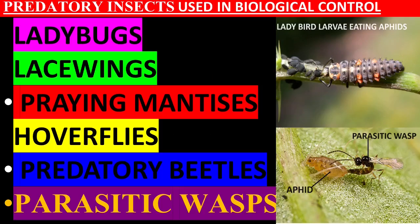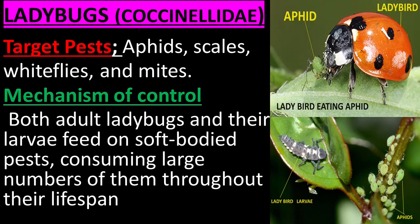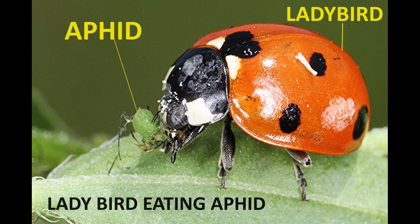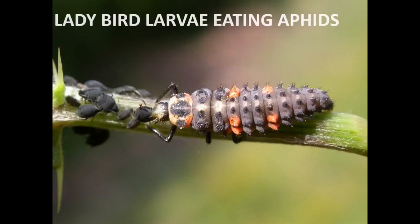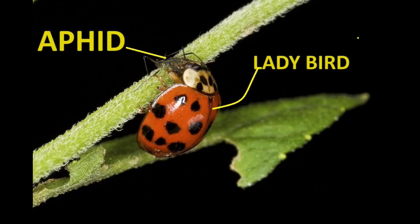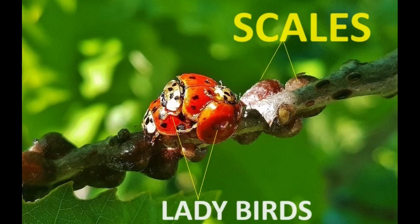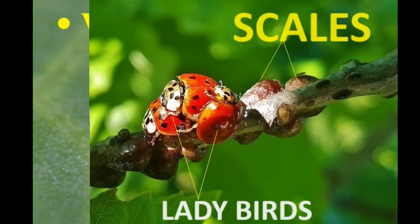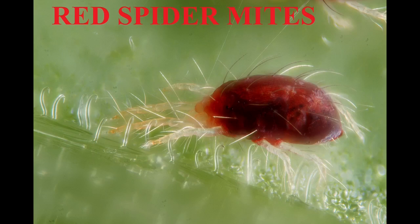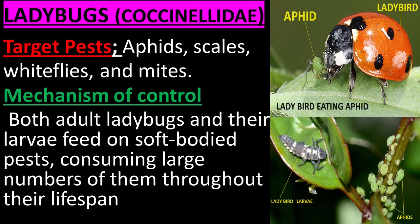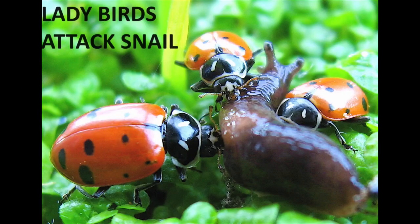Predatory insects used in biological control. Ladybugs: target pests are aphids, scale insects, whiteflies, and mites. Both adult ladybugs and their larvae feed on soft-bodied pests, consuming large numbers of them throughout their lifespan.